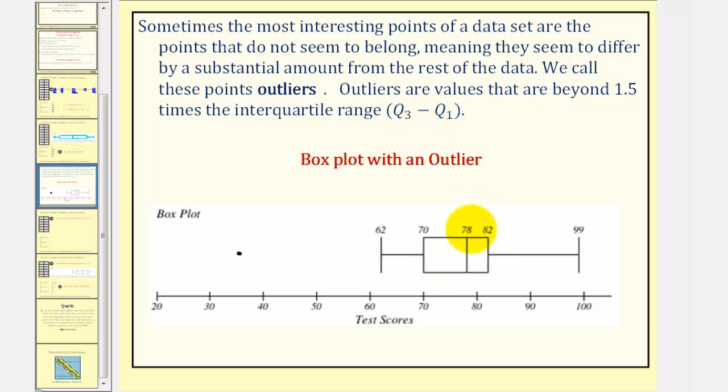Notice here Q3 minus Q1 would be 82 minus 70 or 12. And 1.5 times 12 is equal to 18. So values that are 18 units above 82 or below 70 would be considered outliers. Notice how this value here looks like it's 35, which is more than 18 units below Q1. Therefore, it's an outlier. So instead of extending the whisker all the way out to 35, we stop the whisker at the next lowest value and only put a single point at the value of 35.